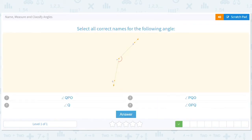Select all correct names for the following angle. So we know what they are. They're OPQ or QPO. So do we see QPO? We see QPO. Do we see OPQ? We see OPQ. And unless they've written something twice, those are the only ones. So we can take those two choices.